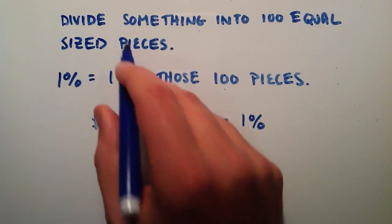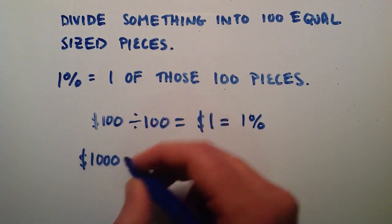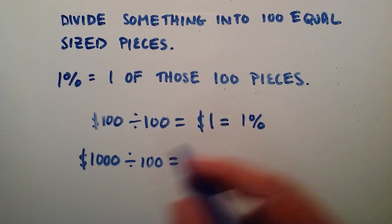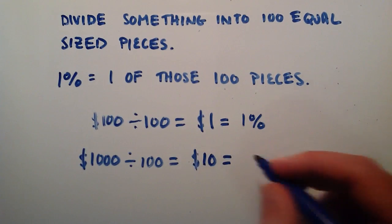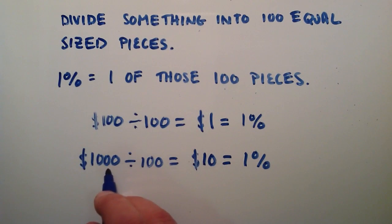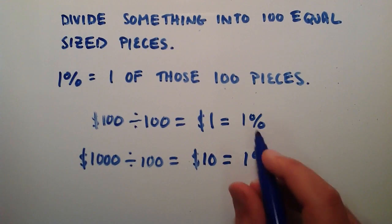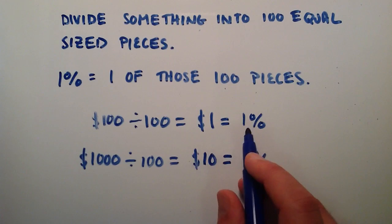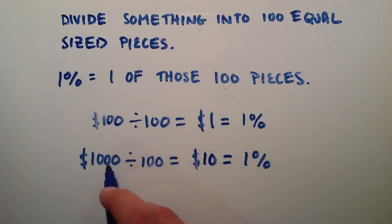So on the other hand, let's say that we have a different object of interest. Let's say our object of interest is $1,000. So let's divide $1,000 into 100 equal sized pieces. Well $1,000 divided by 100 is equal to $10. And that's also equal to 1% because this is 1 piece out of 100 pieces. So basically the percentage by itself tells us no information. We have to know what our object is in order to give our percentage a value. So in this case 1% of $100 is equal to $1, and in this case 1% of $1,000 equals $10.